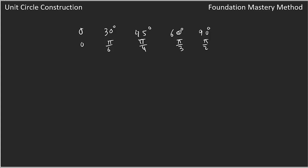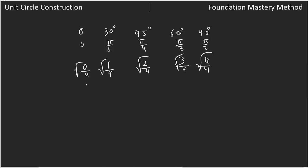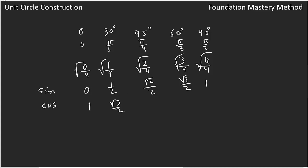Now we'll use another special trick. Just write 0, 1, 2, 3, 4, then divide each term by 4. This is a small trick to remember standard values. Then take the square root of each term and simplify. The first gives 0, the second gives 1 half, the third gives radical 2 over 2, the fourth gives radical 3 over 2, and the last gives 1. These are my sine values. For cosine, go in the other direction: write 1, then radical 3 over 2, radical 2 over 2, 1 half, and 0. So I have sine and cosine values — these will constitute the unit circle.